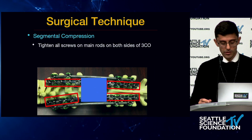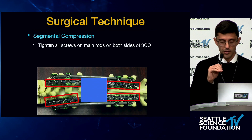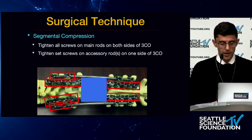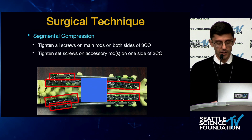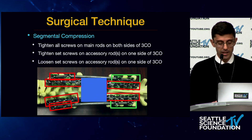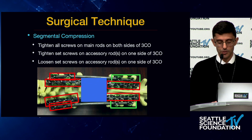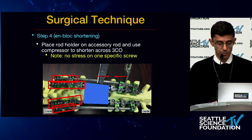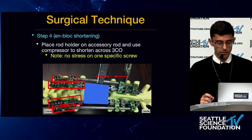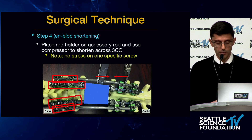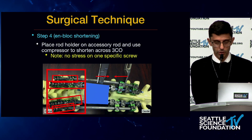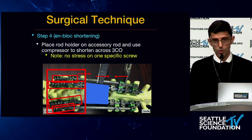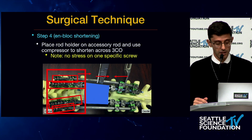Starting by tightening all screws on the main rods on both sides of the three-column osteotomy. Then on one side, tighten the set screws on the accessory rod. Leave the set screws on the contralateral accessory rod free and open — that's where they will slide during segmental compression. Place a rod holder on the accessory rod, then compress. This allows the whole segment to shorten unblocked across the VCR site, with no stress on individual screws — no screw pull-out because the entire segment moves together.